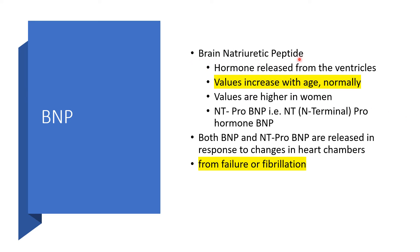Brain natriuretic peptide is a hormone released from the ventricles. The value will increase with age normally — the older you become, the higher the value of BNP. The values are also higher in women. So in older men and older women, values are expected to be higher, and when you match the same age group, it is expected to be higher in women than in men.